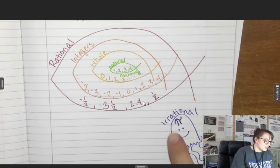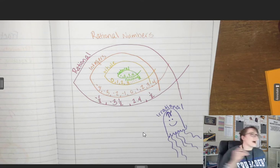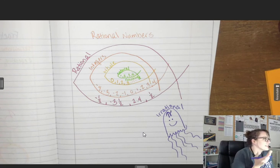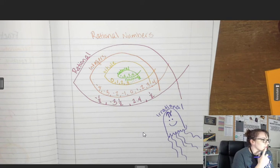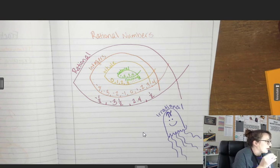And since pi has a little squiggly line, jellyfishes have little squiggly lines. Pi is irrational. We can't say this number is pi. It just goes on forever. We can get close to pi, but we can't pinpoint pi. It doesn't exist.